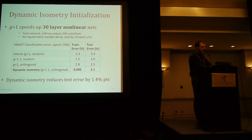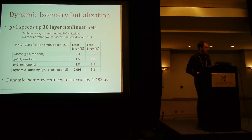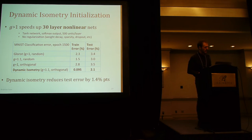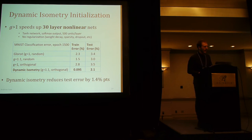To test this out, we trained 30-layer non-linear networks on MNIST — tanh networks with softmax outputs, 500 units per layer, no regularization. This is not gunning for performance, but asking: does this initialization actually speed up training? Comparing a number of options, the initialization with orthogonal weights scaled slightly above 1 actually trains much faster, with much lower training error, and that also translates to a little bit of improved test error.